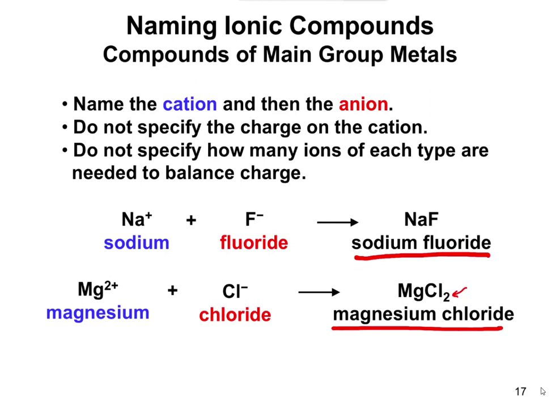We don't specify how many of each ion there are when naming ionic compounds. This will sound pretty simple — just say one name, then the other. It gets more confusing with covalent compounds, because for those we actually do name the subscripts. But for now, for an ionic compound, you name the cation and then the anion, and nothing more than that.